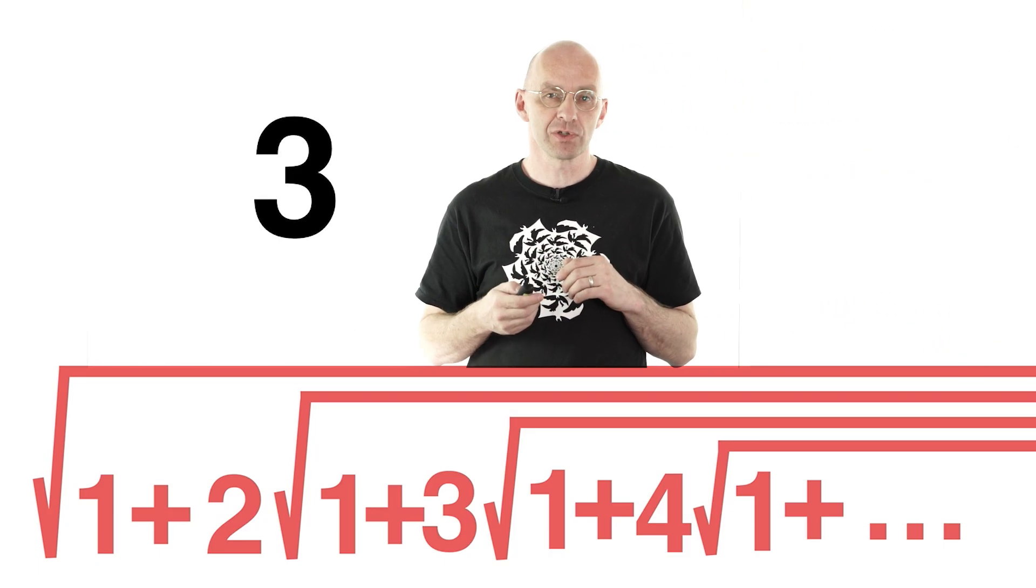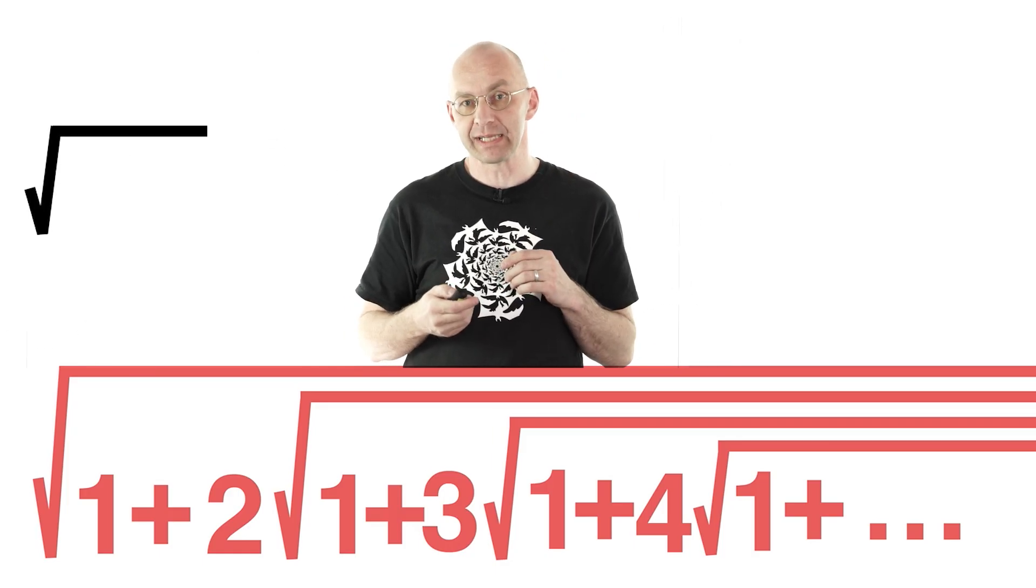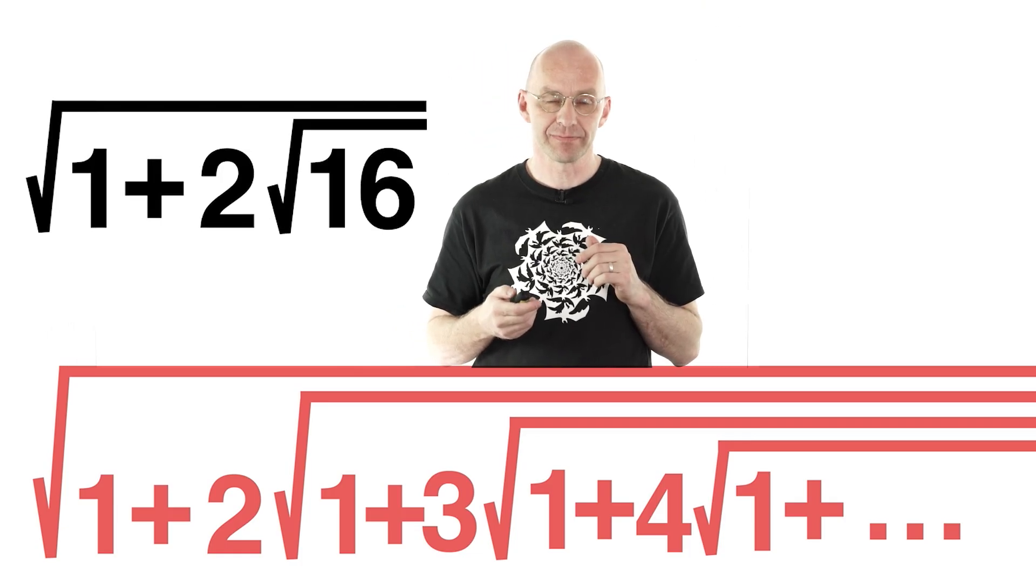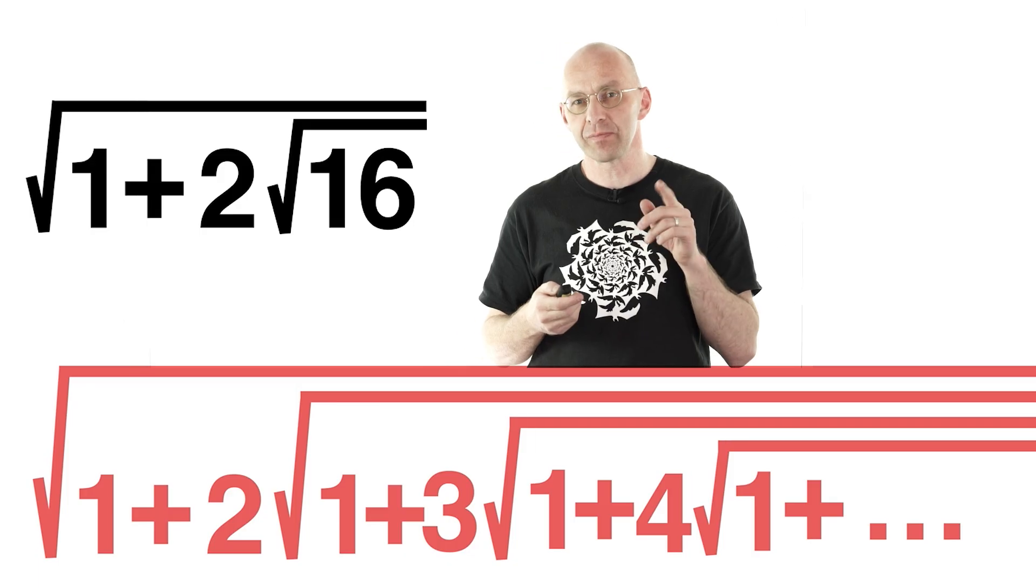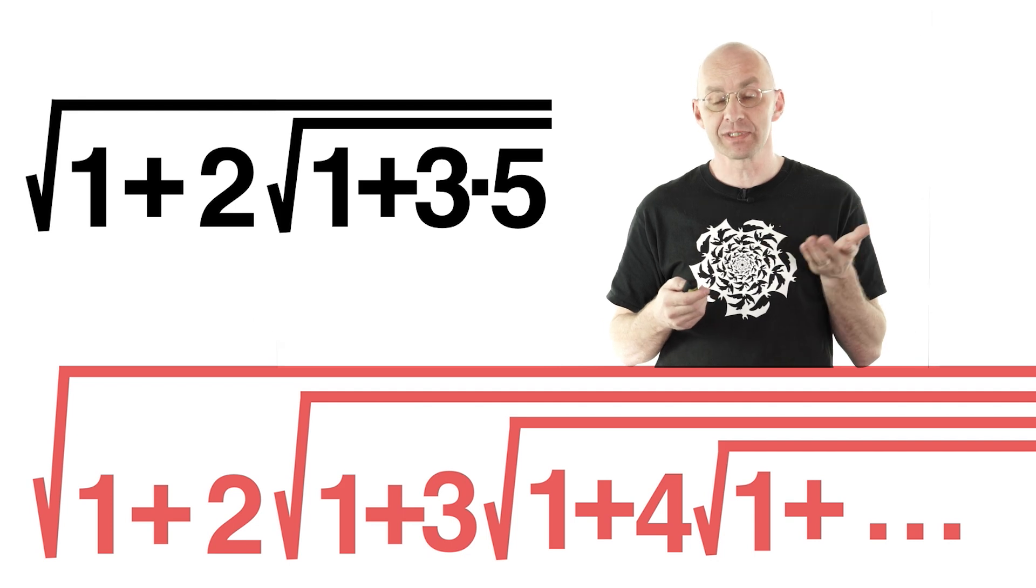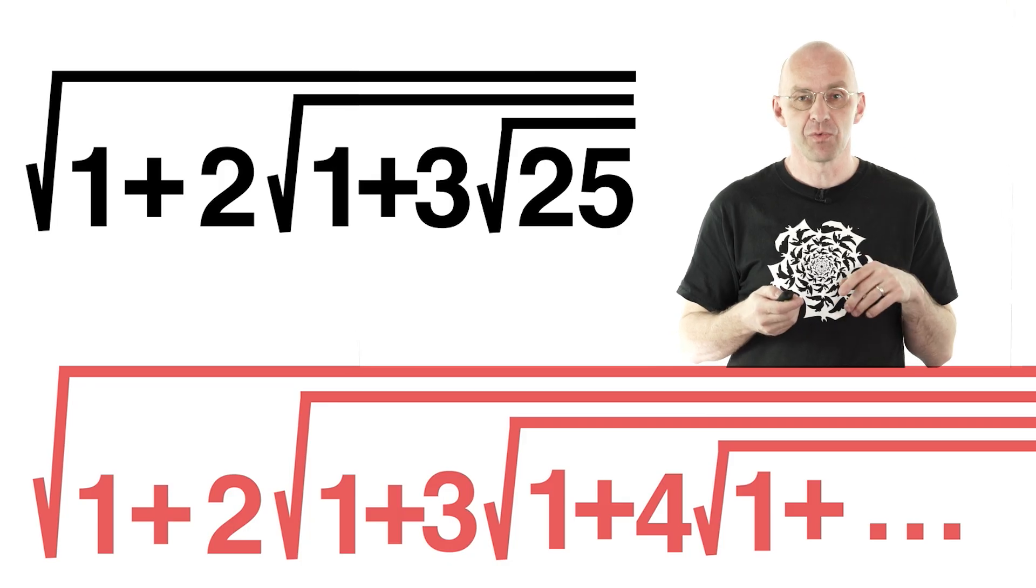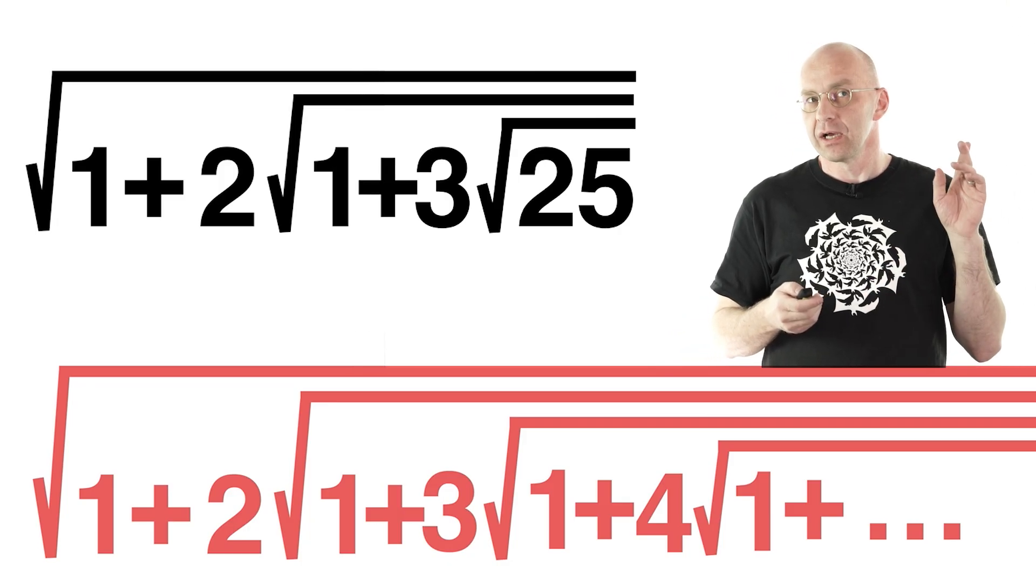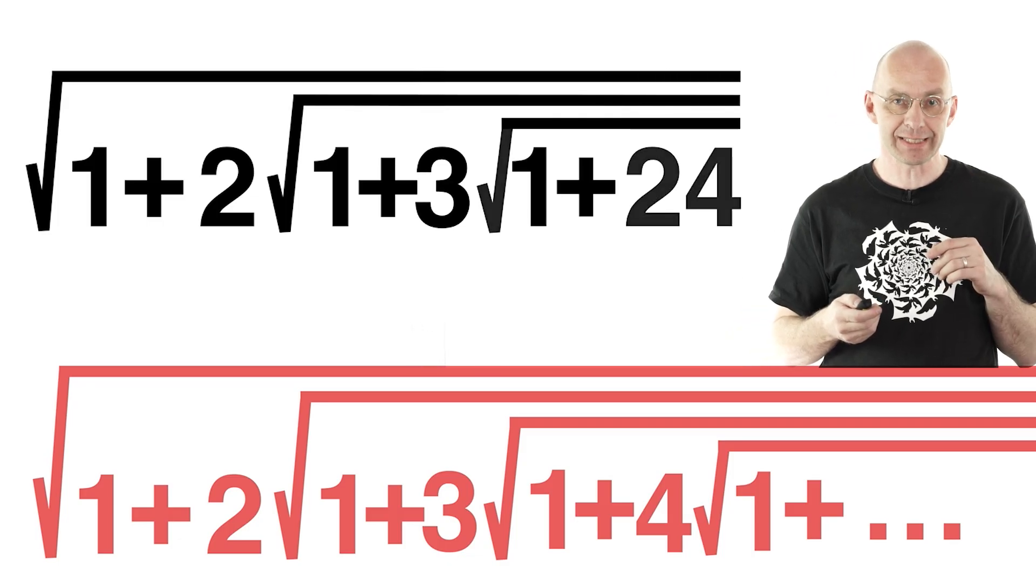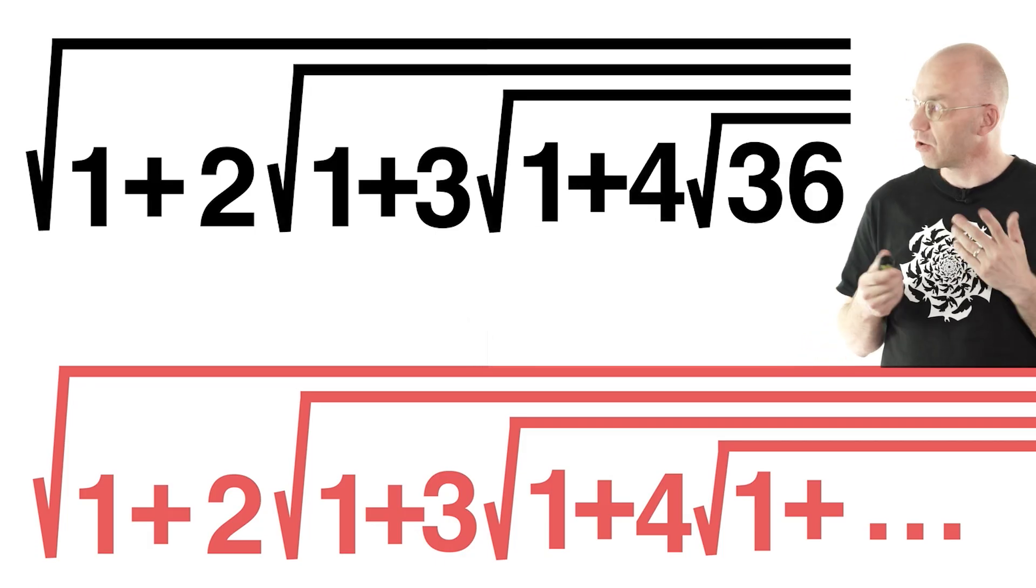So he says 3 is equal to square root of 9. Well yes, and 9 is equal to 1 plus 8. 8 is equal to 2 times 4. 4 is equal to square root of 16. 16 is equal to 1 plus 15, and 15 is equal to 3 times 5. And 5 of course is equal to square root of 25. And you can probably see how this continues. But let's just do one more: 25 is equal to 1 plus 24, and 24 is 4 times 6, and 6 is equal to square root of 36.